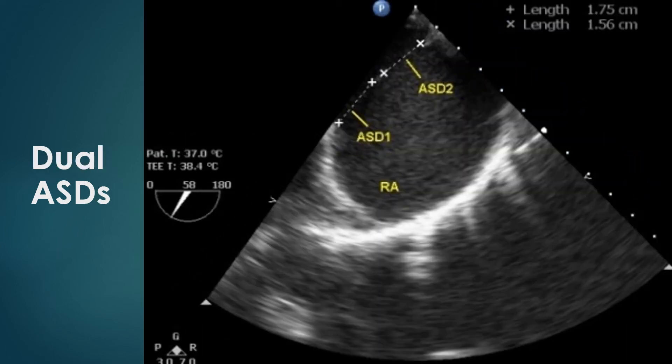This transesophageal echo image shows dual atrial septal defects with a small intervening segment of atrial septum. One defect measures 17.5 mm and the other measures 15.6 mm, totaling 33.1 mm. The rims at both ends appear deficient, so device closure may not be feasible. Surgical closure will be ideal, provided there are no features of irreversible pulmonary hypertension.